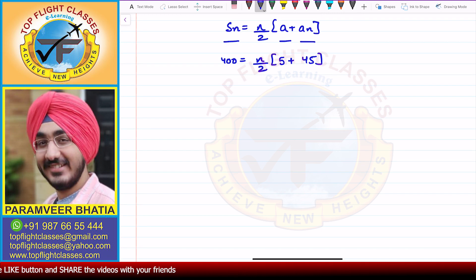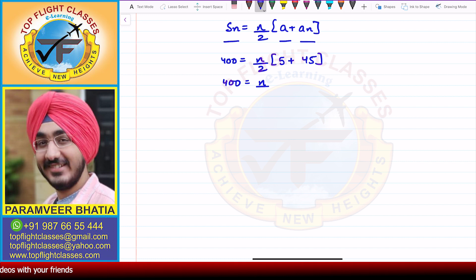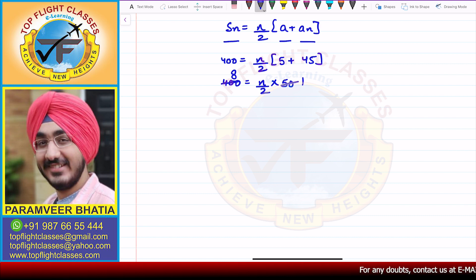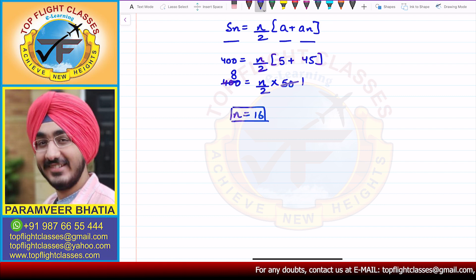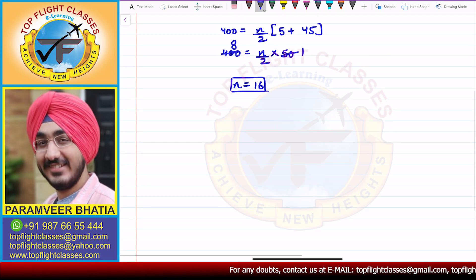So here what I will get is: 400 is equal to n by 2 times (5 plus 45), that is 50. So from here I get n is equal to 8 into 2, that is 16. So n value is 16.